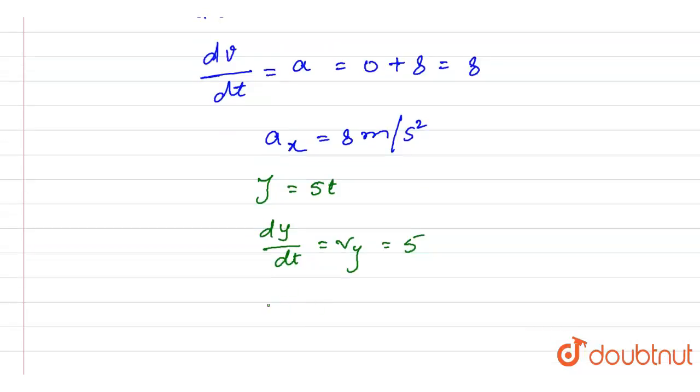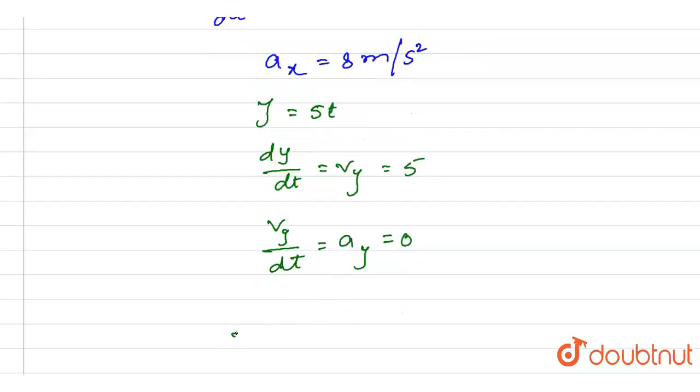When we further differentiate velocity in y direction with respect to time, we will get acceleration in y direction, and this will be equal to 0. Therefore, net acceleration is equal to ax which is equal to 8 meter per second square. Thank you.